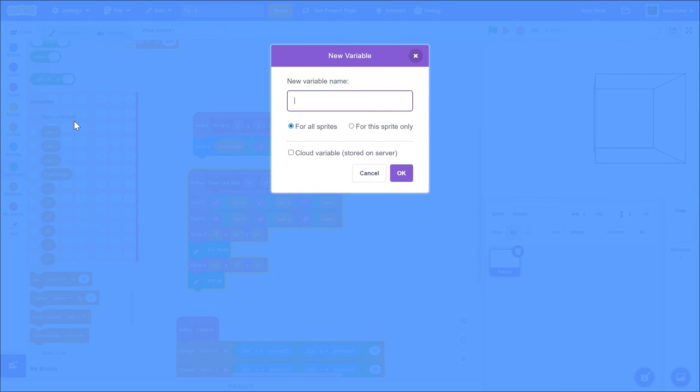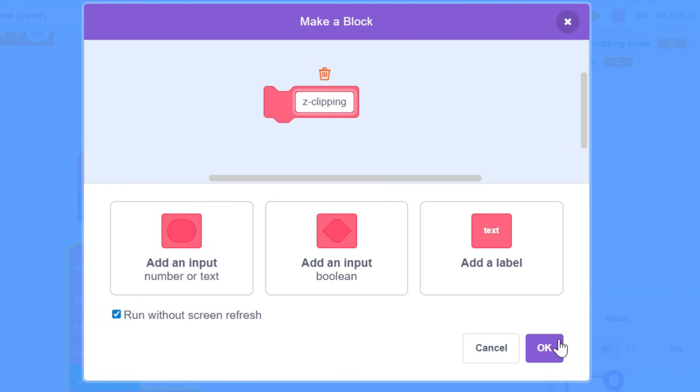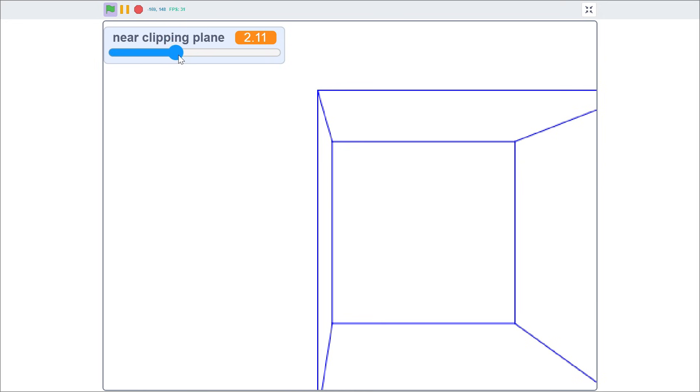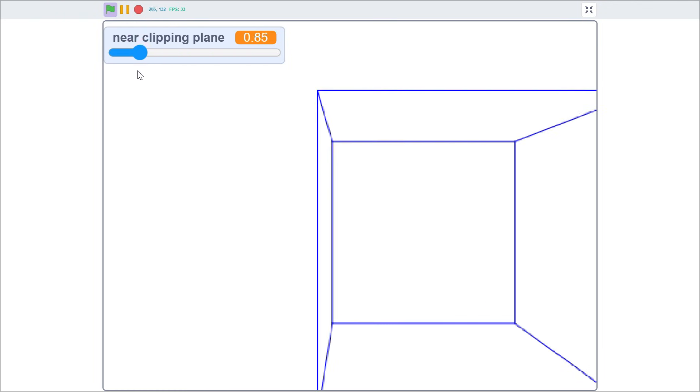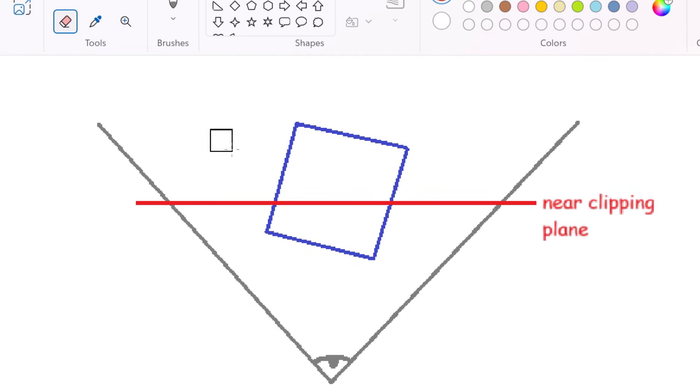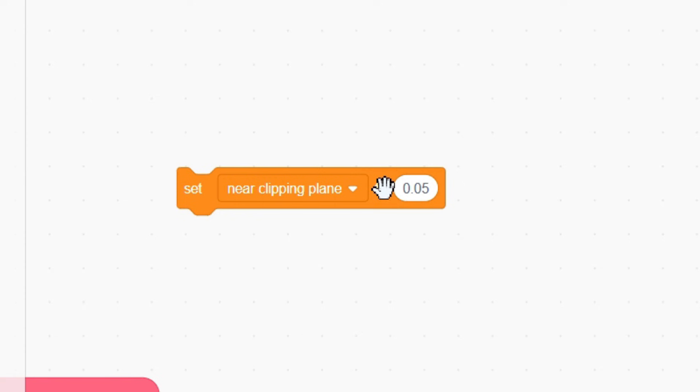For z-clipping, create 2 new variables, near clipping plane and clip percent, as well as a dedicated block to keep things organized. Now the near clipping plane is defined as a z distance from the camera, behind which no lines will be drawn. So if this is our cube and this is our plane, then anything over here will not be drawn. I'd recommend setting the distance to 0.05.